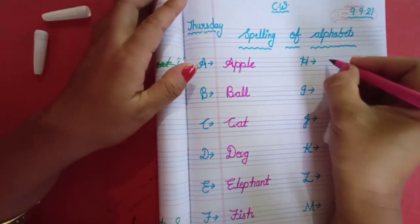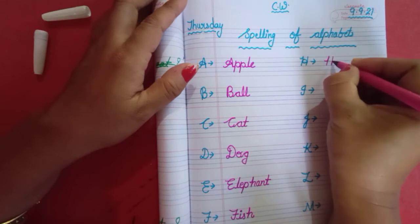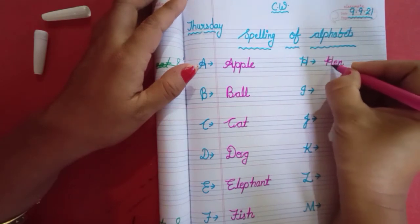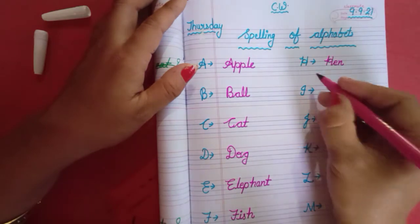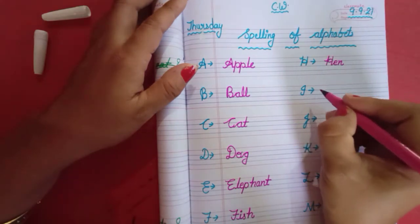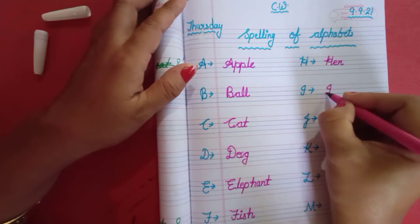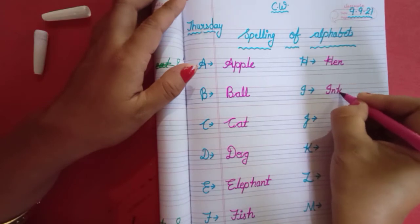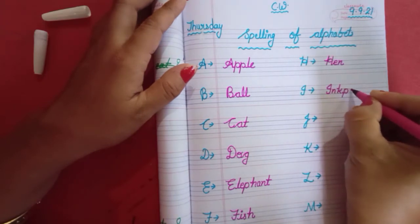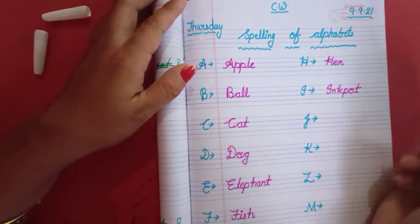H for hen. Or H for horse. H E N hen. I for ice cream. I for ink pot. I N K P O T. Ink pot.